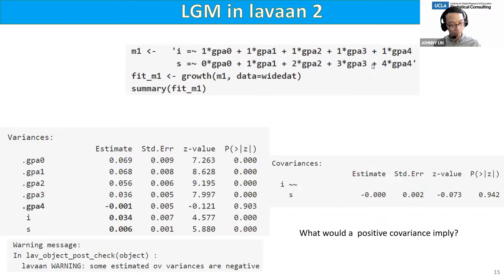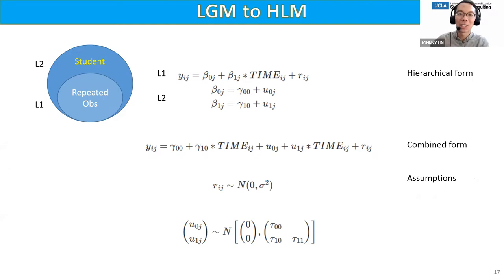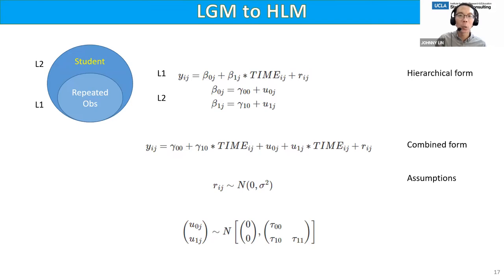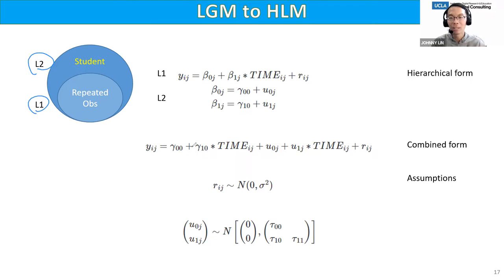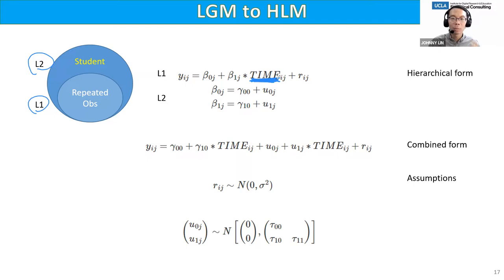We're going to get more technical because we're talking about HLM, and I'm assuming you have some prior knowledge of it. HLM stands for hierarchical linear model. At level one we have repeated observations — the time variable. At level two we have the student. So level one is semester/time, and level two is student. Currently we don't have any predictors for the student, so all we have are the intercept and the residual.